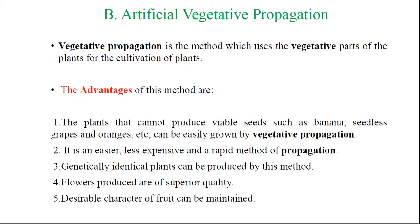Naturally, that part of the plants is modified and functions as a propagation part of the plant, known as the natural methods of plant propagation. We all know in FYVAC we have considered this point, like as the runner, sucker, bulb, tuber, offset, bulbil, etc. All these are the natural methods of vegetative plant propagation. But with reference to our syllabus, we will consider here only artificial methods of plant propagation, and there are four ways.